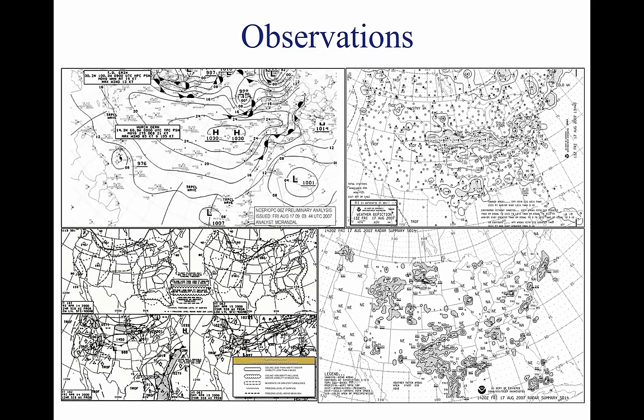This information includes the type of report, station identifier, date and time, modifier as required, wind, visibility, runway visual range, weather phenomena, sky condition, temperature dew point, altimeter reading, and applicable remarks. Although the reports cover only a small radius, the pilot can generate a good picture of the weather over a wide area when many reporting stations are looked at together.